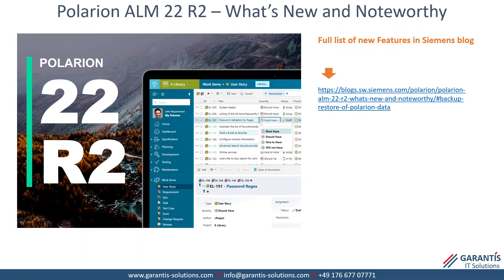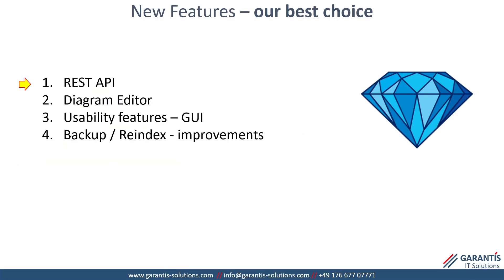Polarin ILM 22R2 was released in October 2022. There is a link from Siemens which describes in very good detail what is new and noteworthy. Please follow the link to see the full description of the new features, and we will focus only on REST API.